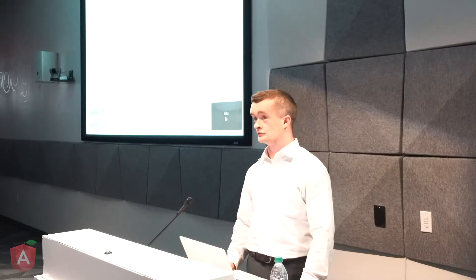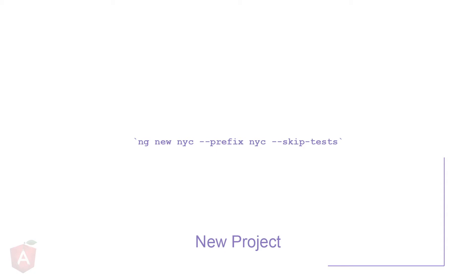As I get into it, I'll encourage you all to consider your use case in particular and the differences between a Universal application and a client-side Angular application. Taking you through a new project, the first command is ng-new — ng-new, nyc, then the prefix nyc, and skip-tests. To the chagrin of others, I'll share publicly that we don't do testing immediately. When we build an application, we write some code and test afterwards. We do skip-test as a way to get started cleanly.